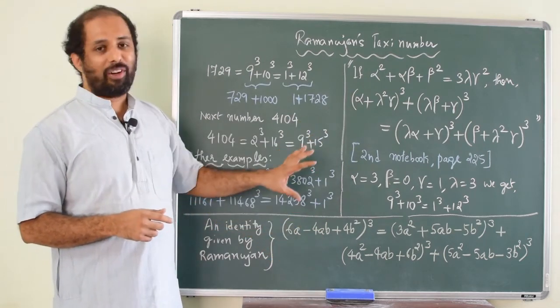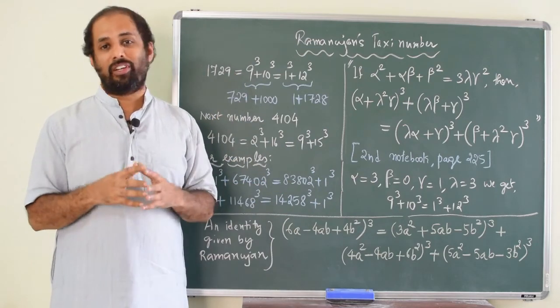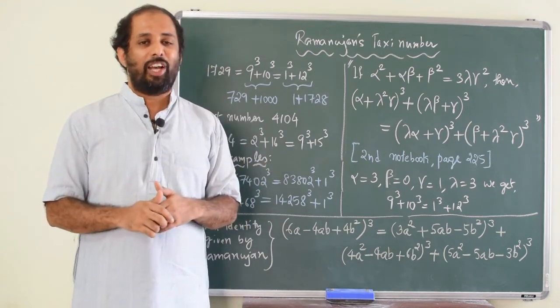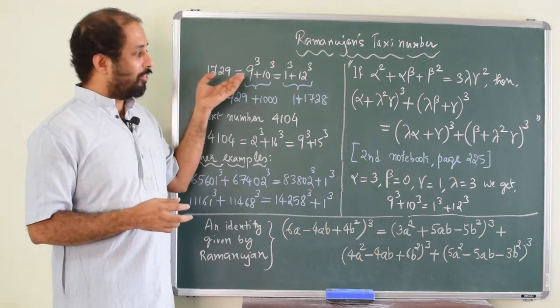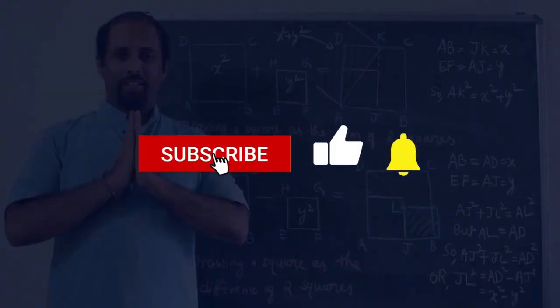Like if you substitute different values, you will get numbers which can be written as sum of 2 cubes in two different ways. So, when we read this story of taxi number in our school textbooks, we may think that Ramanujan travelled in only one taxi. But actually, he had owned hundreds of such taxis.